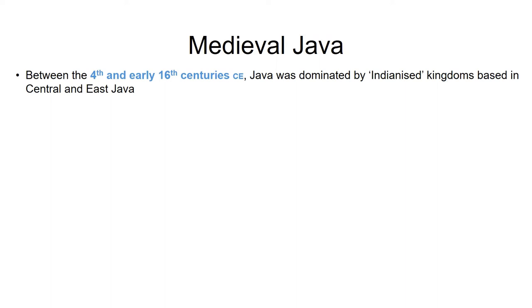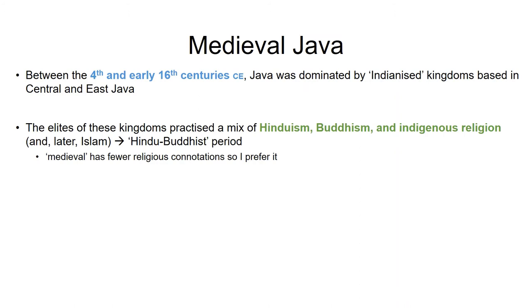By medieval Java I mean the period between the 4th and early 16th centuries, when Java was dominated by so-called Indianized kingdoms — largely based in central Java until about the beginning of the 10th century, and in East Java from the 10th century until the 16th. The elites practiced a mix of Hindu, Buddhist, and indigenous cults, and from about the 14th century on also Islam. I prefer the term medieval as it has fewer religious connotations and connects Java to other parts of the Afro-Eurasian medieval world.